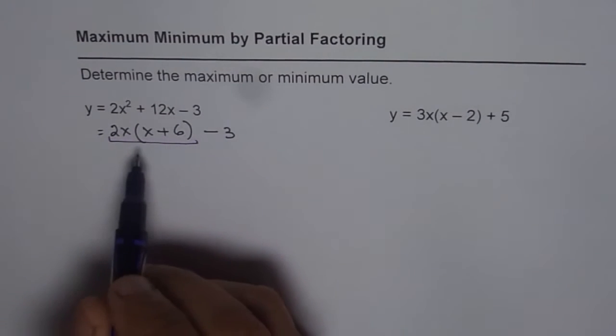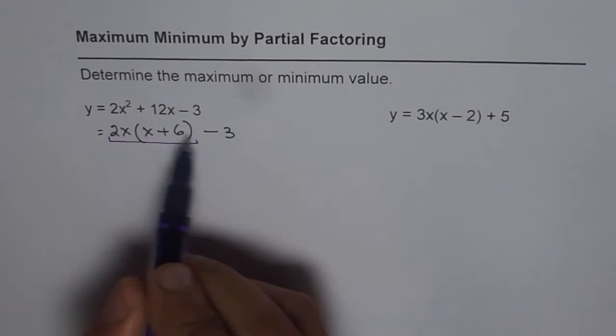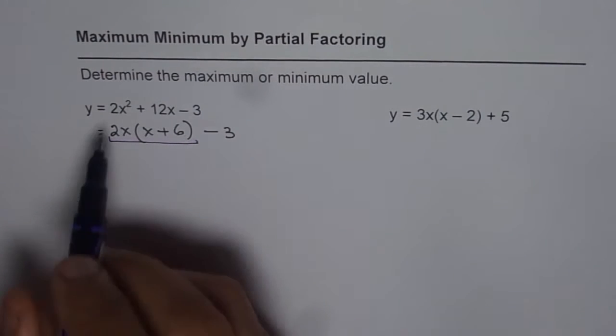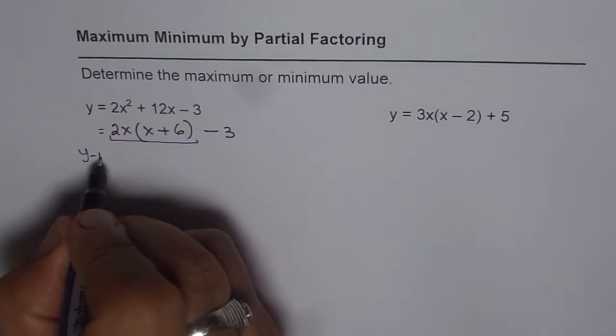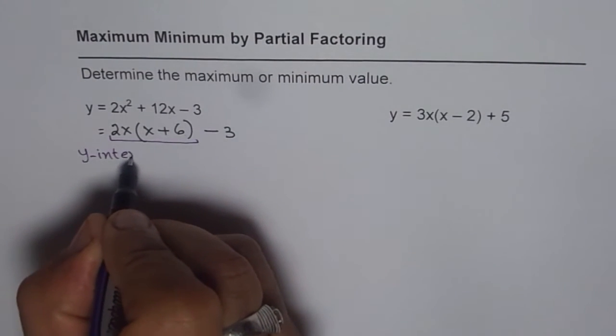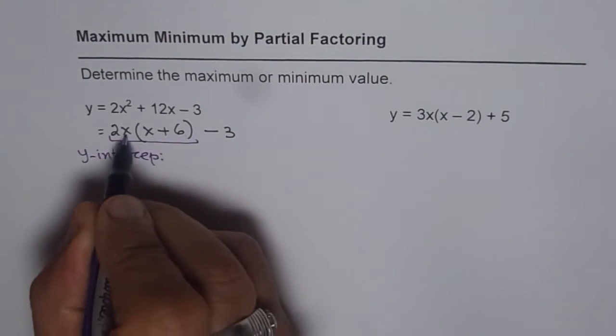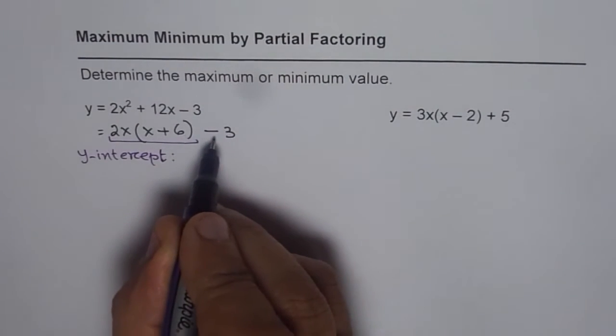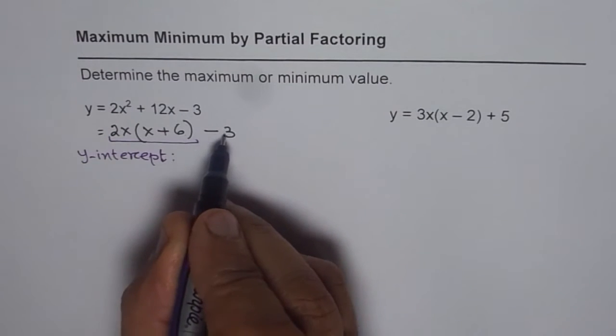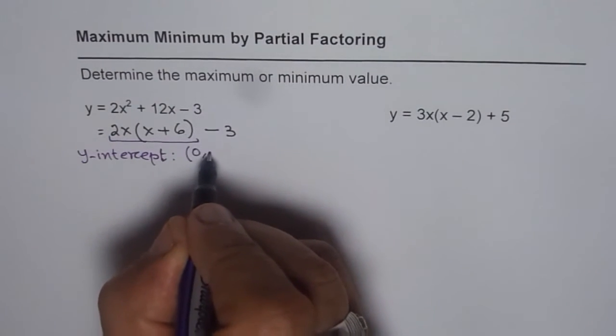You can also interpret this as y intercept of the given function. So, the y intercept of the given function is what? That is what we will try to see now. So, y intercept is x equals to 0. So, if x equals to 0, we get y value minus 3. So, it will be 0 and minus 3.